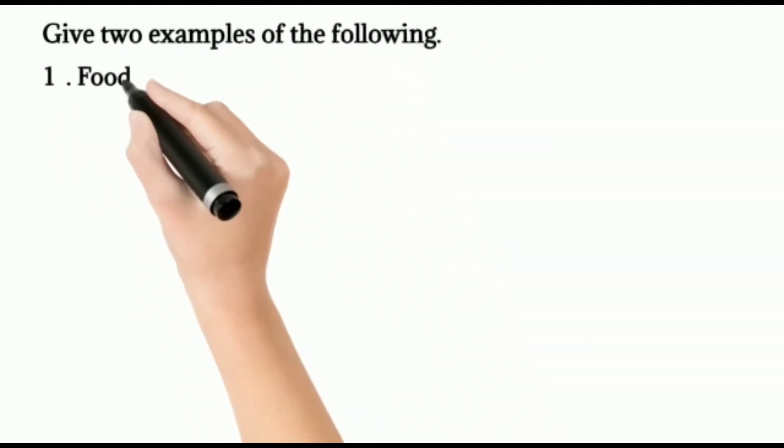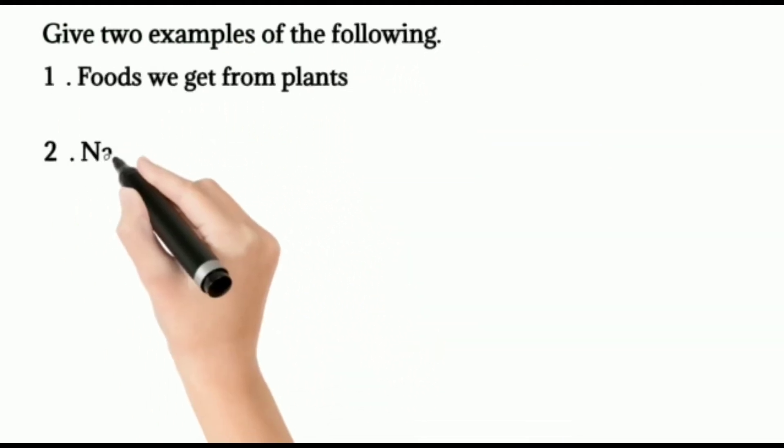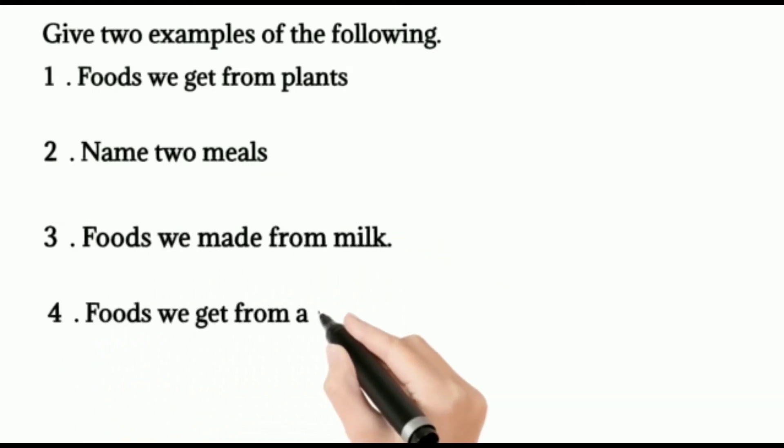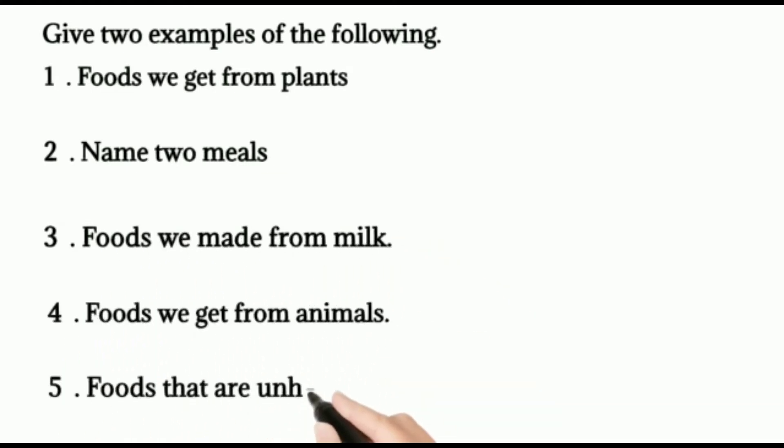Two examples of the following. One, food we get from plants. That is fruits, vegetables, nuts, cereals, pulses, etc. We eat plant or parts of the plant like root, stem, leaves, flower, seeds, etc.